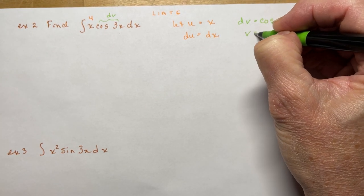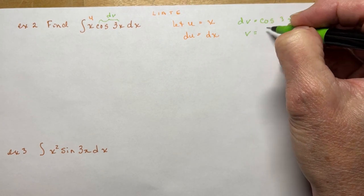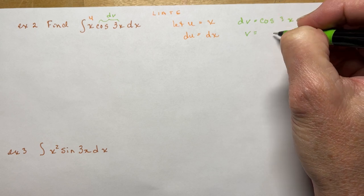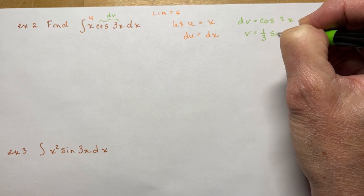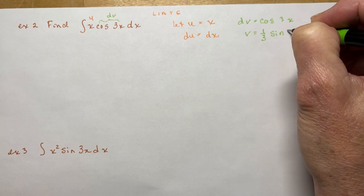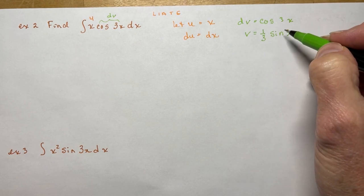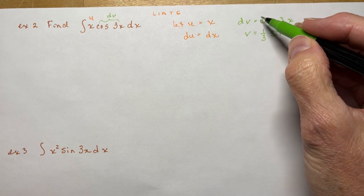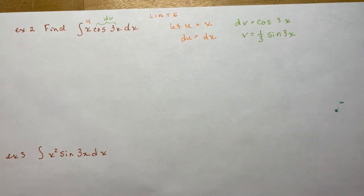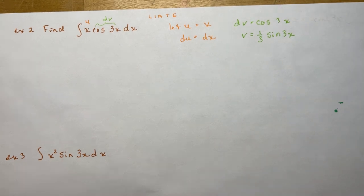What's the integral of cos(3x)? Well, thinking backwards — sine goes to cos — so it's positive sine. And I have to do one-third of that to make up for the derivative of the 3x part. So if I took the derivative of (1/3)sin(3x), I would have cos(3x) times 3, and 3 times a third would give me 1. So v = (1/3)sin(3x).